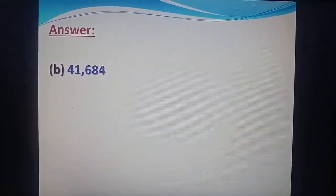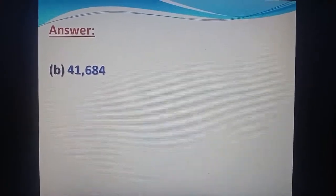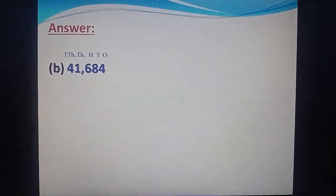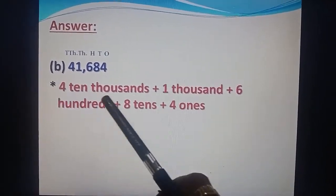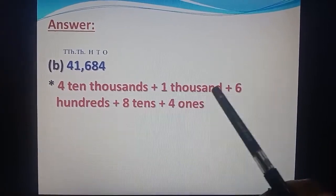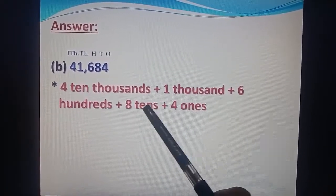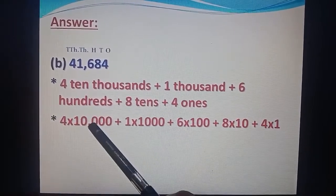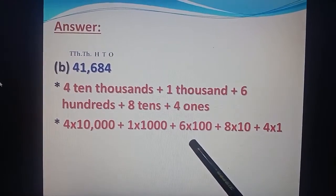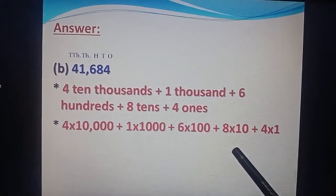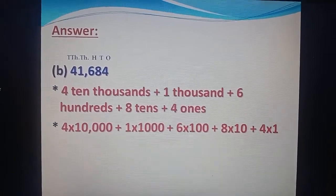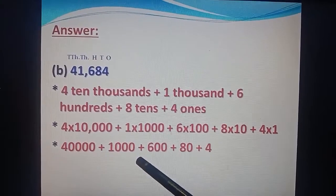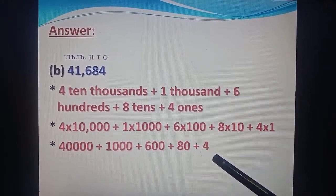B part: 41,684. We assign the places — ones, tens, hundred, thousand, ten thousand. First way: four ten-thousands plus one thousand plus six hundreds plus eight tens plus four ones. Second way: 4 × ten thousand plus 1 × thousand plus 6 × hundred plus 8 × ten plus 4 × one. Third way: forty thousand plus one thousand plus six hundred plus eighty plus four.